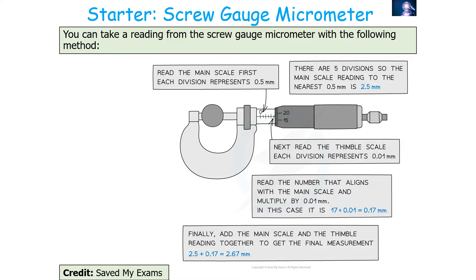For example, if the thimble scale reads 17, you multiply by 0.01 to get 0.17 millimetres. If you want that in metres, multiply by 10 to the minus 5. Then add your main scale value and your thimble reading together to get your final measurement.